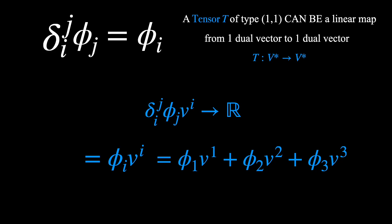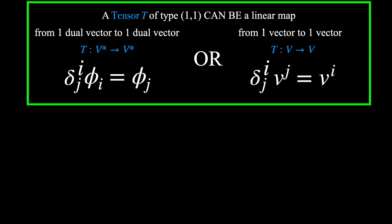But this could equivalently be thought of as the Kronecker delta only acting on the dual vector phi sub j and producing another dual vector phi sub i. The dual vector then acts on the vector v i to produce a real number. And the same kind of reasoning can be applied to the other forms of the Kronecker delta.